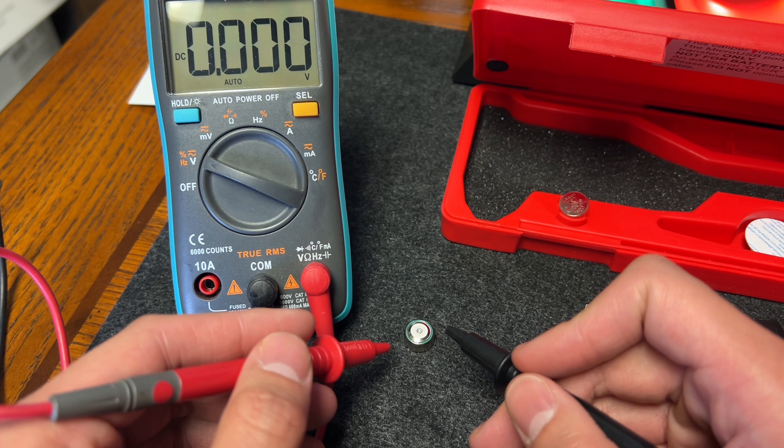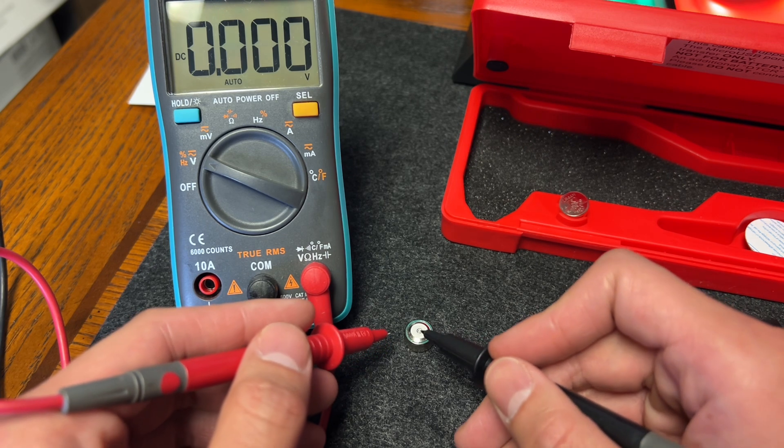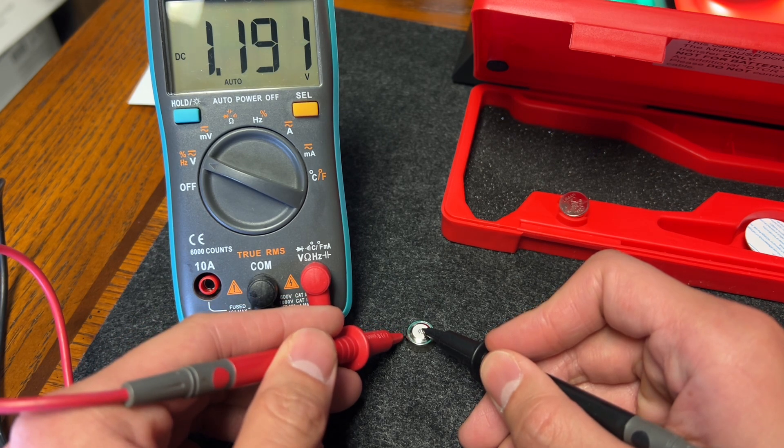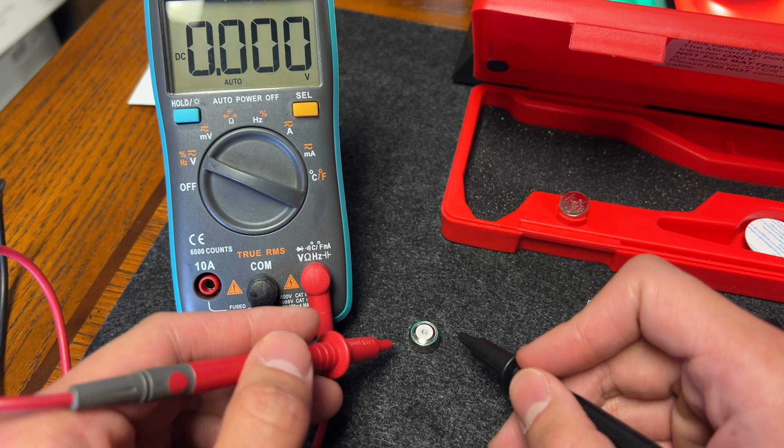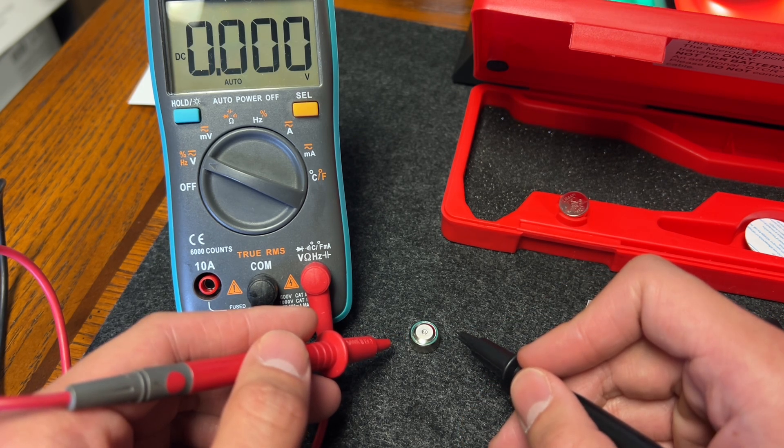The installed battery is a 1.5 volt LR44. Now it shows only 1.191, so it's kind of low. So we're going to put a new battery in the caliper to see if the caliper works again.